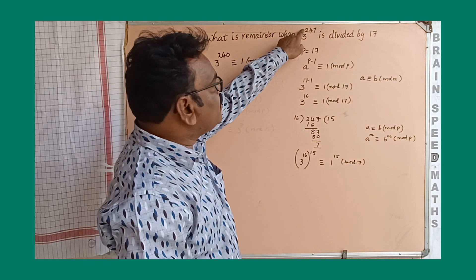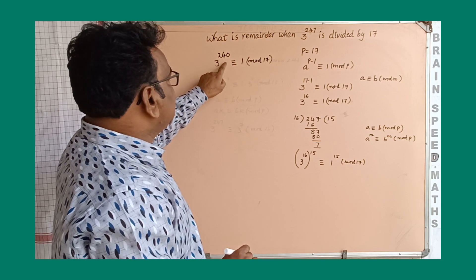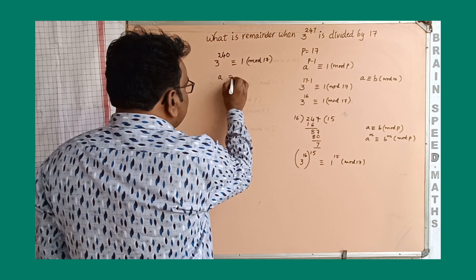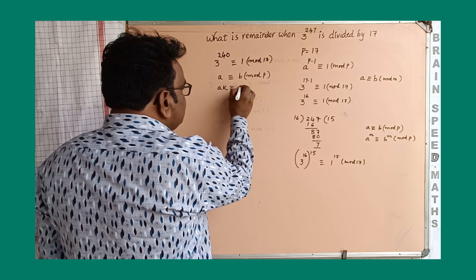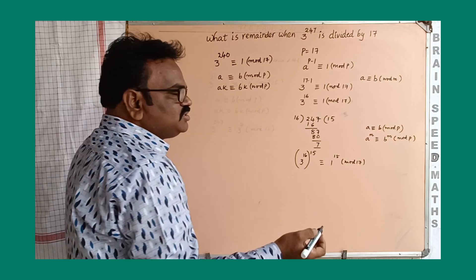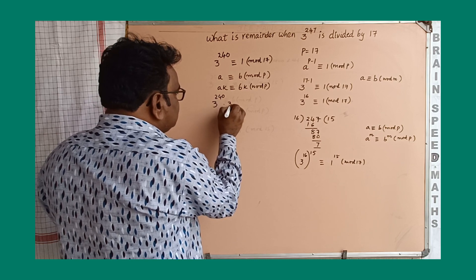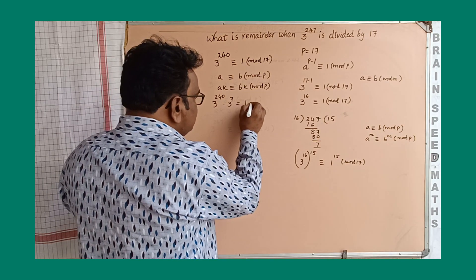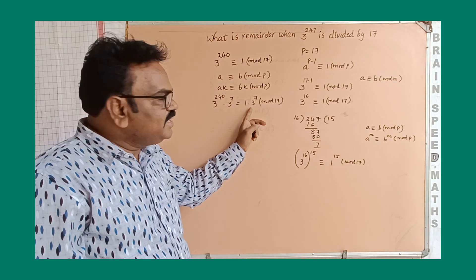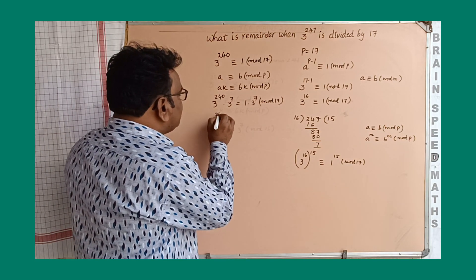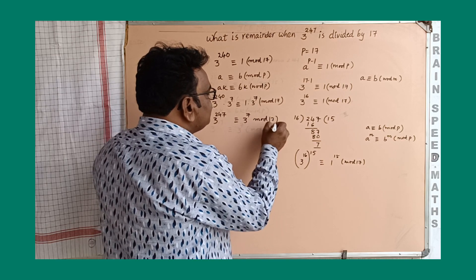But here 3 to the power of 247 is needed, not 240. So we take 3 to the power of 7 on both sides. The rule states: if A is congruent to B modulo P, then A into K is congruent to B·K modulo P. So 3 to the power of 240 multiplied by 3 to the power of 7 is congruent to 1 times 3 to the power of 7, modulo 17. This gives us 3 to the power of 247 is congruent to 3 to the power of 7, modulo 17.